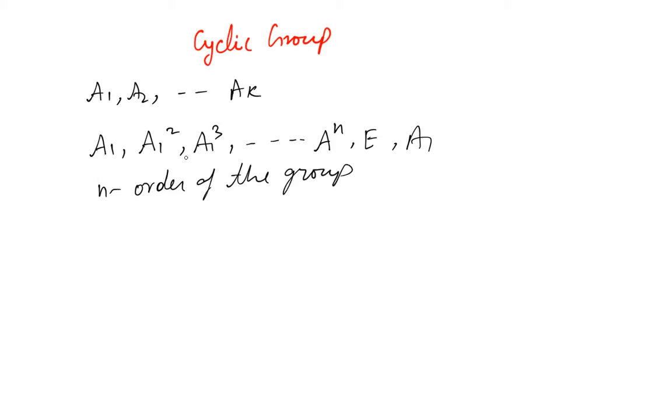Now if this thing happens such that if we do this and the group repeats itself, which means we are able to reproduce, which means that this series here is nothing but a1, a2, and so on ak, which means the multiplication of a1 by itself produces the group itself, then it's called a cyclic group.